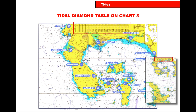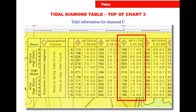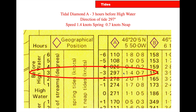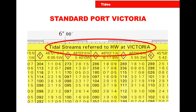At the top of RYA Chart 3 there's a box that gives us the tidal diamonds. Looking at tidal diamond C, it gives the position in latitude and longitude, and shows the direction and speed at high water: 010 degrees, 0.9 knots for springs, 0.5 for neaps. As we go minus 1, 2, 3 up to 6 hours, and plus 1 to 6, it gives the direction and speed. For example, at 3 hours before high water — HW minus 3 — the direction would be 297 degrees, 1.4 knots for springs, 0.7 for neaps. It's all referenced off Victoria, as stated at the top of the diamonds.